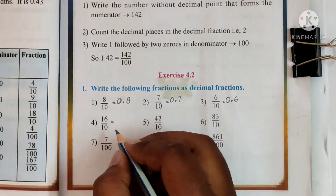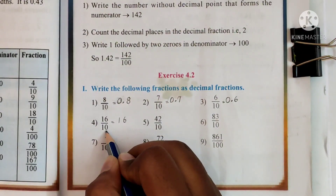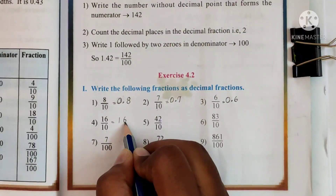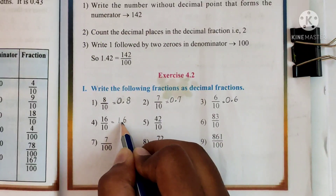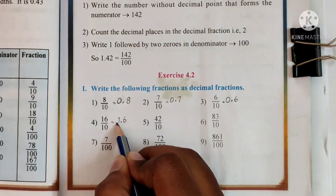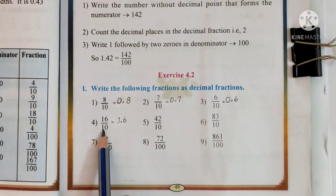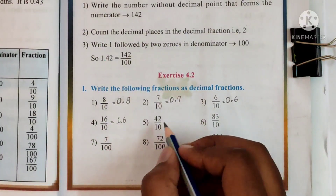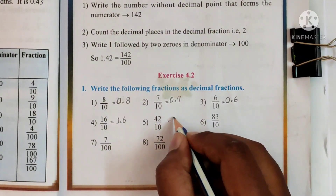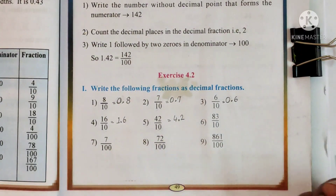Number 4: 16 tenths — write 16. You have 1 zero in the denominator, so put the decimal point after 1 number from the right. From the right after 1 number, put a decimal point. You have 1 here towards the left of the decimal point. So 16 tenths can be written as 1.6. Same way, number 5: 42 tenths — 1 zero, point after 1 number. So 4 and 2, after 1 number from the right, put a decimal point.